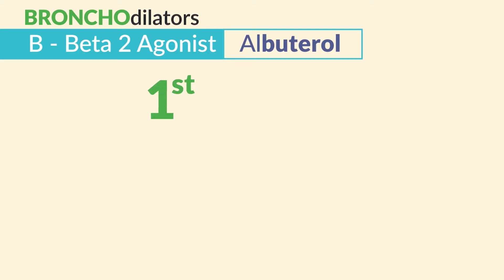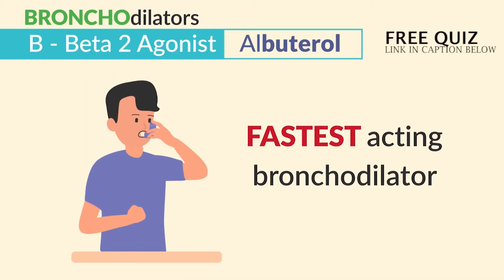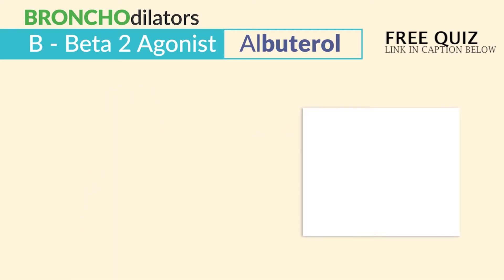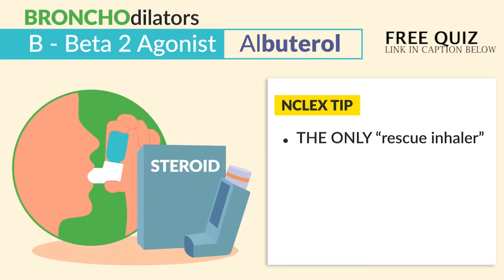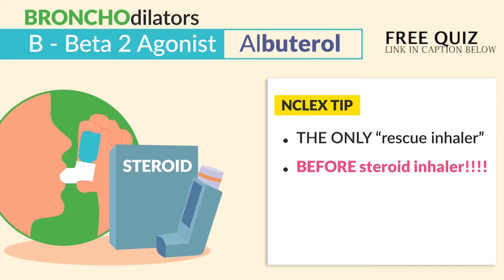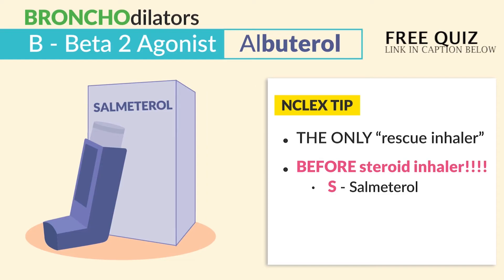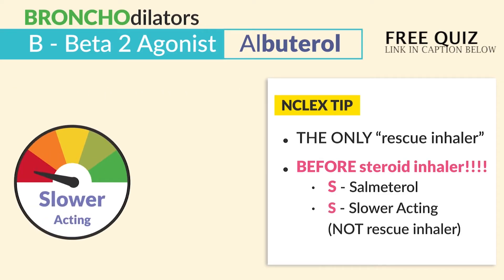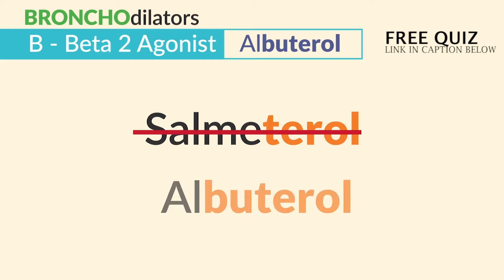Albuterol is the first drug we use during severe asthma attacks, and it's the fastest acting bronchodilator. The NCLEX keyword here is it's the only rescue inhaler during acute asthma attacks to be used before steroid inhalers — that's always a common NCLEX question. Big caution: salmeterol is a beta-2 agonist as well, but it's slower acting and not a rescue inhaler, so it's not to be used during an acute asthma attack since it ends in terol and not butyrol.